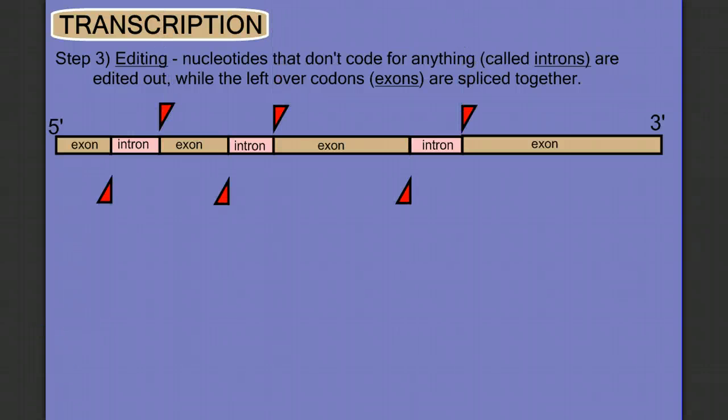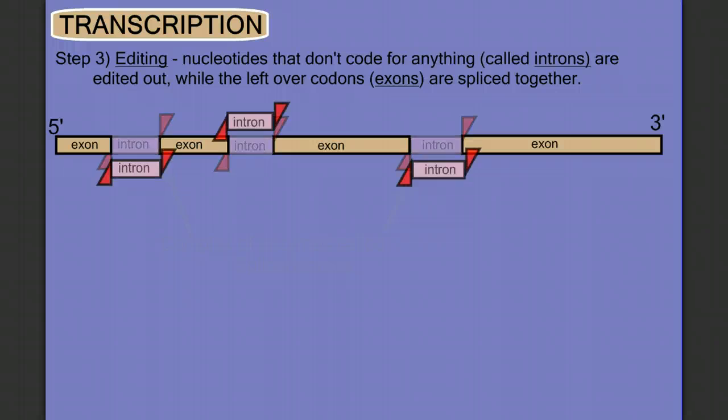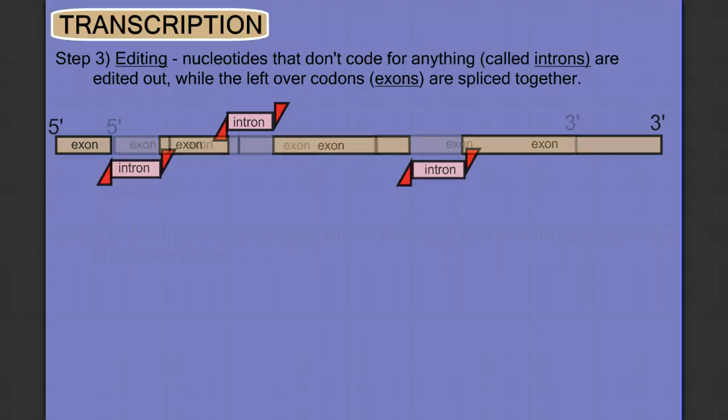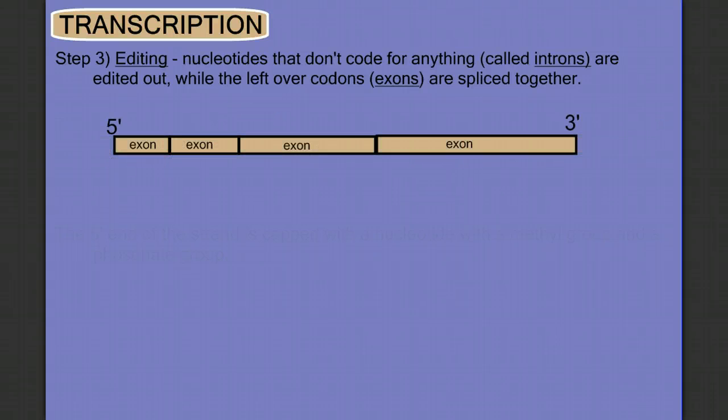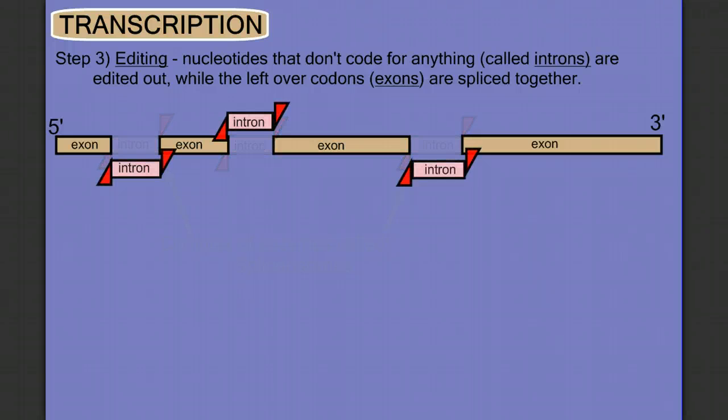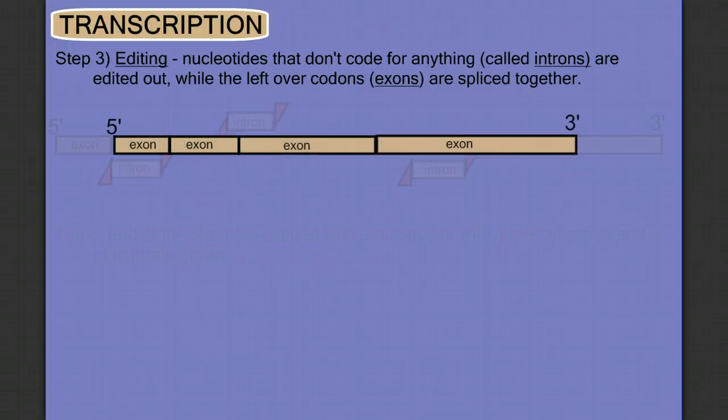So let's watch. Enzymes come in, cut out our introns. These enzymes are actually a complex of enzymes called spliceosomes. They cut out the introns and then pull the exon pieces together. And so we've shortened our code and gotten rid of all that extra information. We can watch that again. Here come the enzymes, cutting out the introns and splicing together the exons.